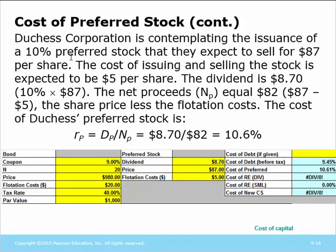The company is going to issue 10% preferred stock, expected to sell for $87. The cost of issuing is expected to be $5 per share. The dividend is 10%, so it's $8.70. The net proceeds equals $82 — that's $87 minus the $5 flotation cost.